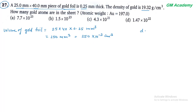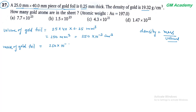Density = mass per unit volume, तो mass = density × volume। Mass of gold foil = 19.32 gram/cm³ × 250 × 10⁻³ cm³ = 4.83 gram।